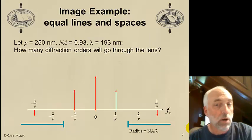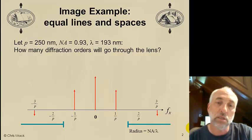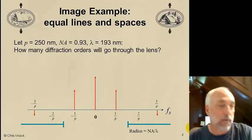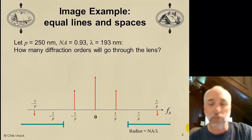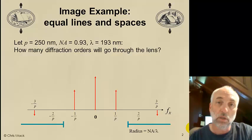Last time we talked about the role of the lens in capturing a portion of the diffraction pattern and using that diffraction pattern to form an image. This time we're going to actually work an example problem. We're going to pick, as our example, a mask pattern of equal lines and spaces.